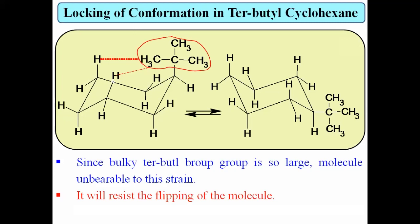Tertiary butyl cyclohexane has two conformations — axial and equatorial. The equatorial conformation is more stable because in the equatorial form there is no 1,3-diaxial interaction: the hydrogens on C3 and C5 are far apart and do not lie in a single plane with the tertiary butyl group. Because of this, the equatorial isomer is more stable, while the axial isomer is highly unstable and resists the flipping of the molecule.